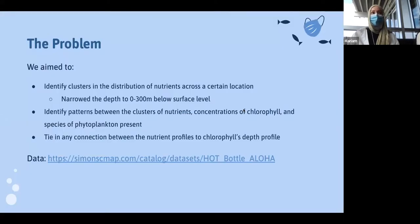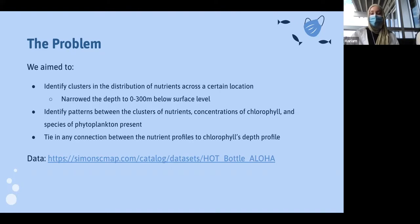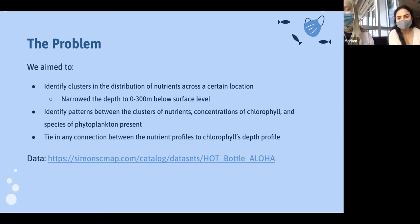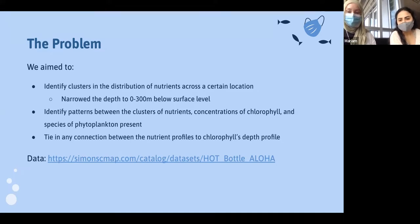The main goal of this project was to identify clusters and their distribution of nutrients across a certain location. We narrowed the depth to zero to 300 meters below surface level because we noticed short-term changes in the given region. Our other goals were to identify patterns between the clusters of nutrients, chlorophyll concentrations, and the species of phytoplankton that might be present in the area, and to tie in any connection between the nutrient profiles and the chlorophyll profiles.